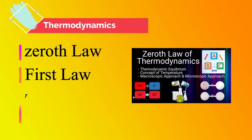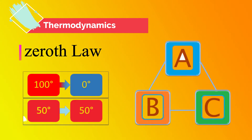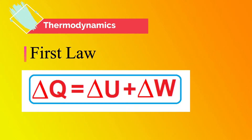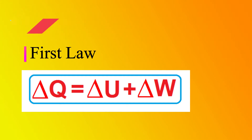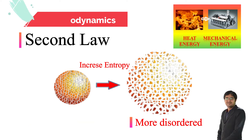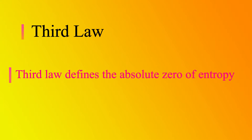Thermodynamics basically entails four laws known as the 0th law, first law, second law, and third law of thermodynamics. The 0th law deals with thermal equilibrium and establishes the concept of temperature. The first law throws light on the concept of internal energy. The second law indicates the limit of converting heat into work and introduces the principle of increase of entropy. The third law defines the absolute zero of entropy.